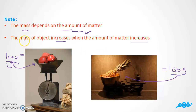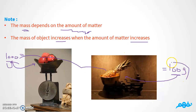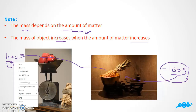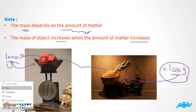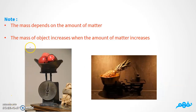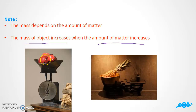The mass of the object increases when the amount of matter increases, and vice versa. If the amount of matter decreases, the mass will also decrease. So if the number of apples increases, the mass increases; if the number of apples decreases, the mass decreases.